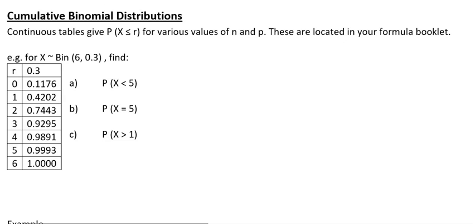In this video we're going to look at how we can use accumulated binomial tables in your formula booklet. You can also use your calculator, but you may want to have a go at using your tables as well. Here, x is distributed with a binomial distribution where n equals 6 and p equals 0.3. We want to find P(X < 5), which is the same as P(X ≤ 4), since the tables give the probability that x is less than or equal to r.